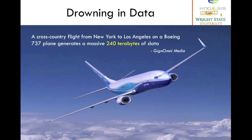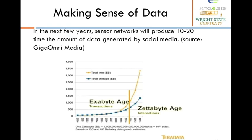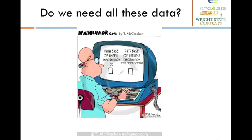These observations are making us drown in data. For example, a cross-country flight from New York to Los Angeles on a Boeing 737 generates around 240 terabytes of data. In 2011 we surpassed the capacity to store all the data we are generating. But do we need to store all this data? Probably not. In the cross-country flight example, the most important information is whether the flight requires any maintenance — so if that information is synthesized, we may safely discard the rest of the collected data.